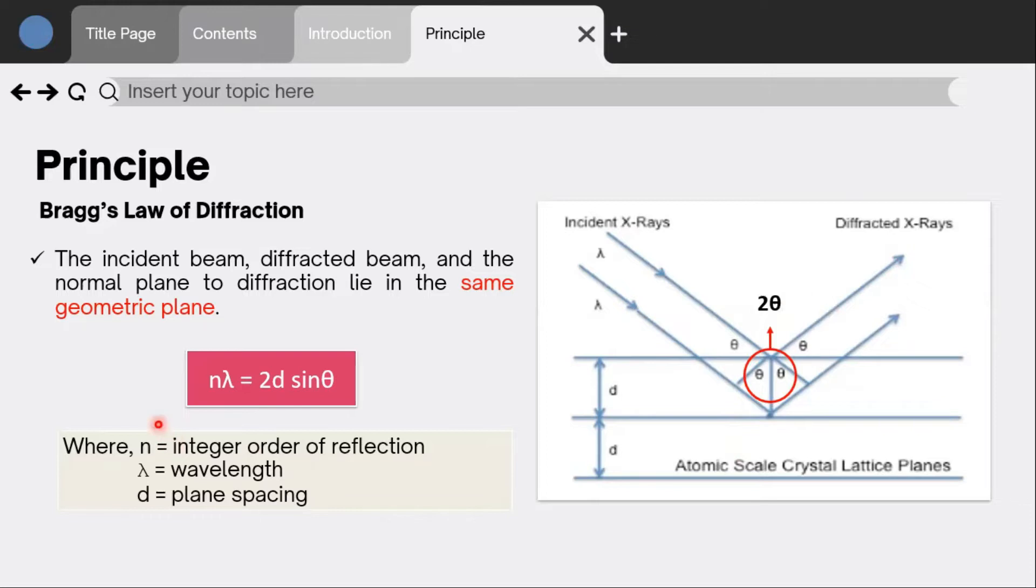Bragg's law is mathematically expressed as n lambda equals 2d sin theta, where n is the integer order of reflection, lambda is the wavelength, and d is the plane spacing.